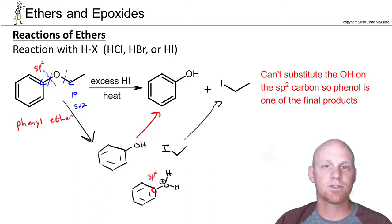So you got to be a little careful. With ethers, usually with excess HCl, HBr, HI, you're going to get two alkyl halides, but not with phenyl ethers. Be careful.